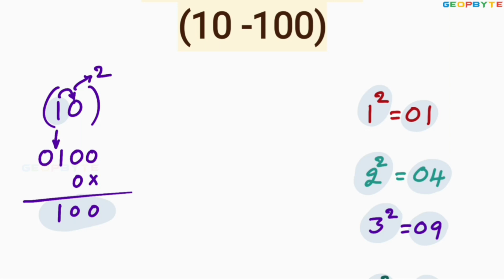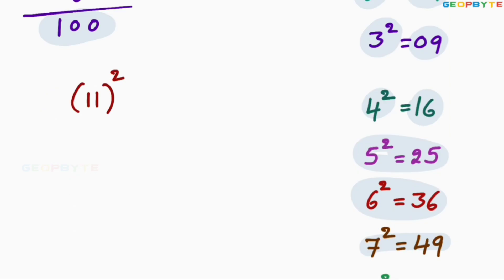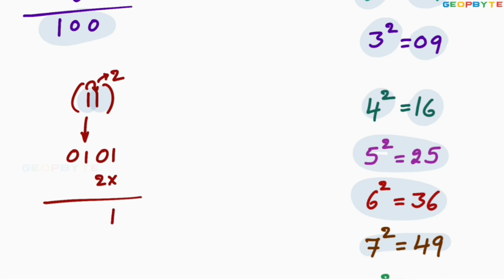I hope you clearly got my point. Similarly, let us take the 11 square. 11 square: first write 1 square — 1 square is 1, write in two digits, 01. Then multiply 1 with 1: 1 into 1 is 1, into 2 is 2. After leaving the first space, write that 2 here. Add these two: 1, 2 plus 0 is 2, 1. Therefore, 11 square is equal to 121.